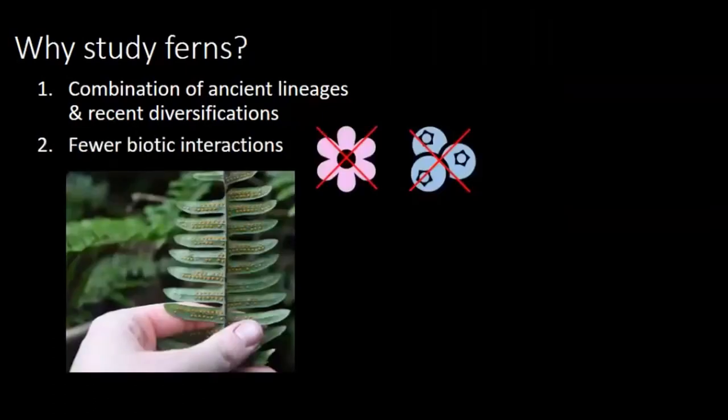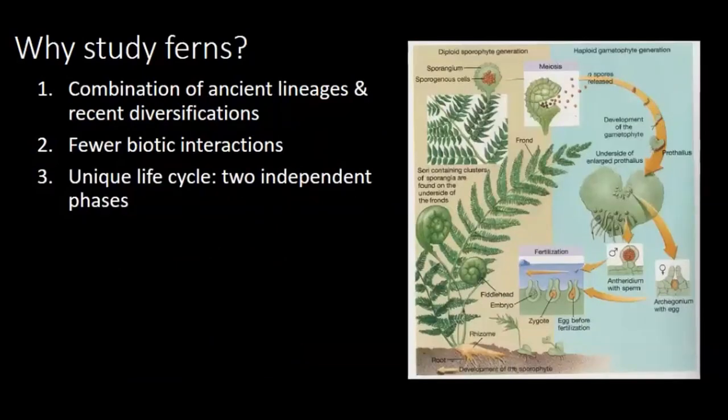Additionally, there are no distracting fruits or flowers with ferns. We think the biogeographic signal more closely reflects geographic patterns, which is great for someone who's interested in biogeography. And ferns have a very unique life cycle — they have independently living sporophyte and gametophyte phases, and this informs and explains much of fern and lycophyte biology.